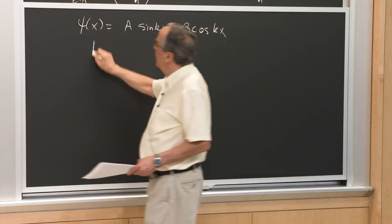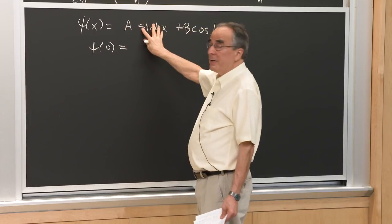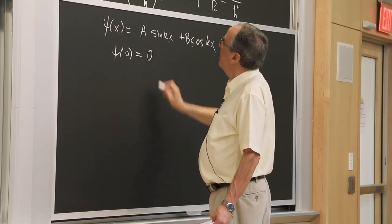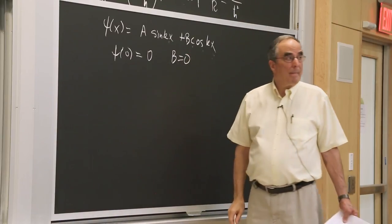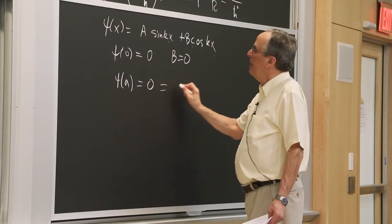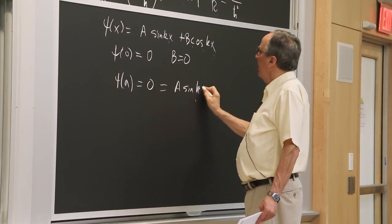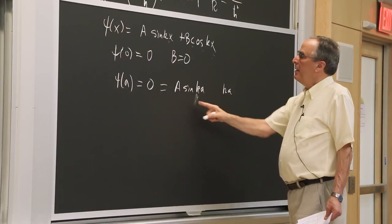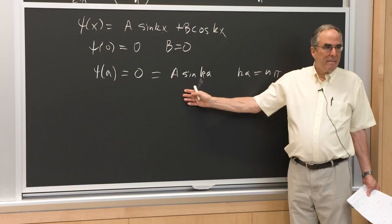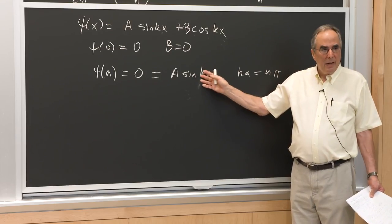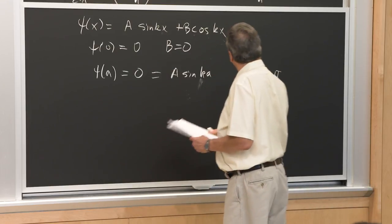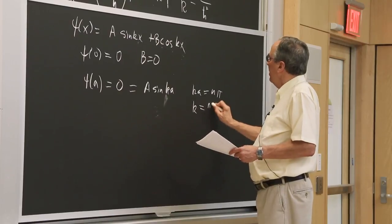Applying the boundary condition psi(0) = 0: sin(0) = 0 but cos(0) = 1, so B must equal 0. The other boundary condition, psi(a) = 0, requires A·sin(ka) = 0, so ka must equal n·pi. Because sine is 0 at 0, pi, 2pi, 3pi, etc., k = n·pi/a.